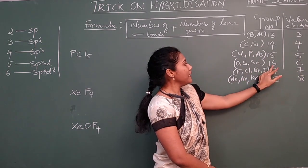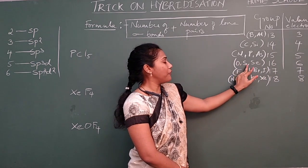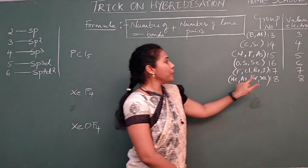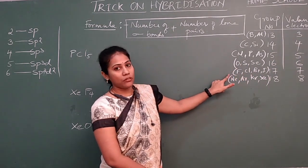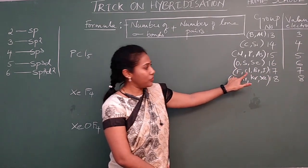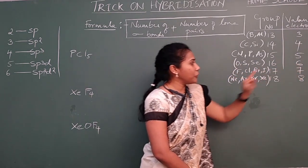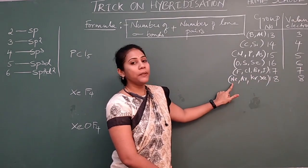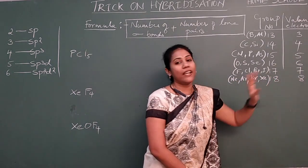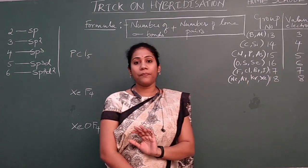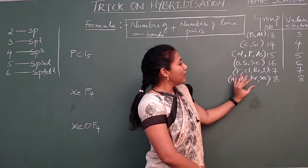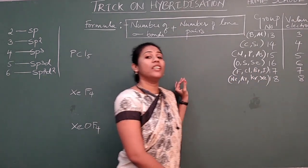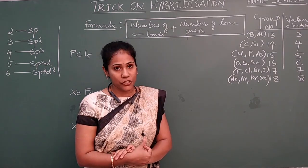Group 16 elements like oxygen, sulfur, and selenium have 6 valence electrons. Group 17 elements — all halogens — have 7 valence electrons. And group 18 elements, the noble gases, have 8 valence electrons. This is the knowledge you must have before working with the hybridization trick.